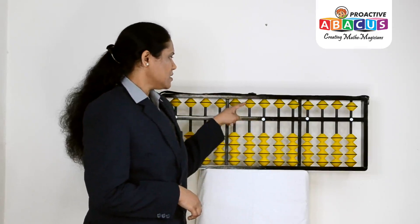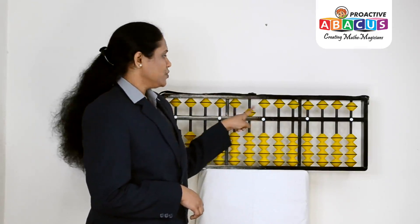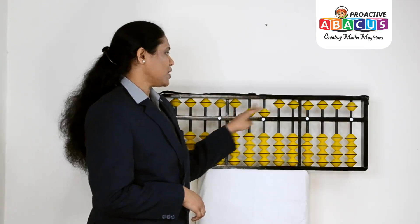Next, we show 55. Upper deck, tens place is 5, unit place is 0. Unit place is 5, we have 55.